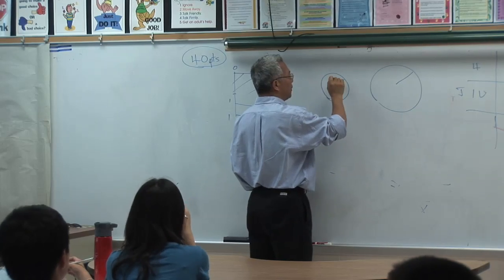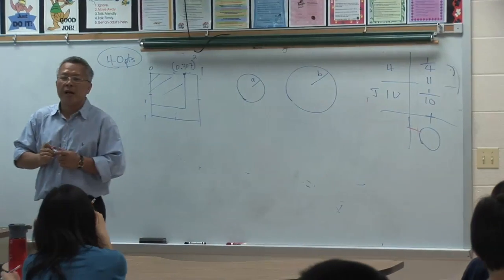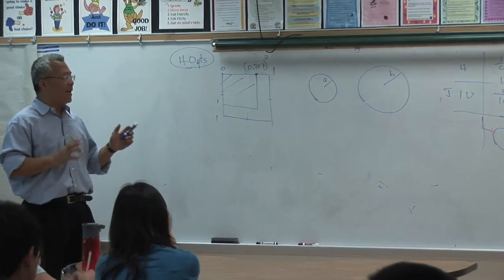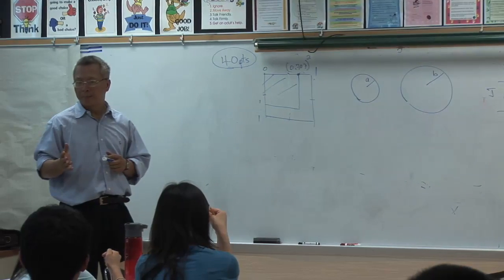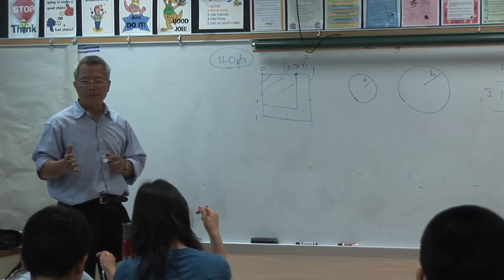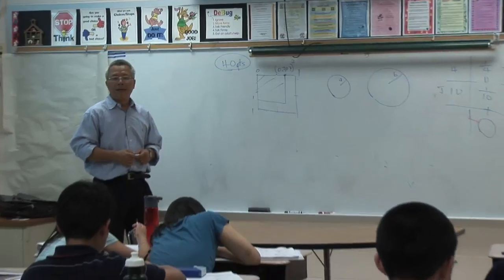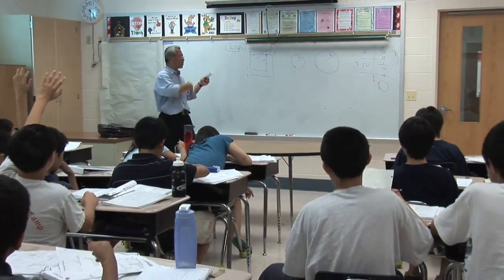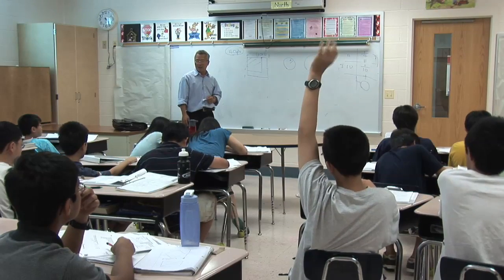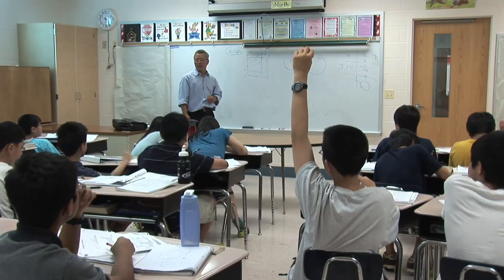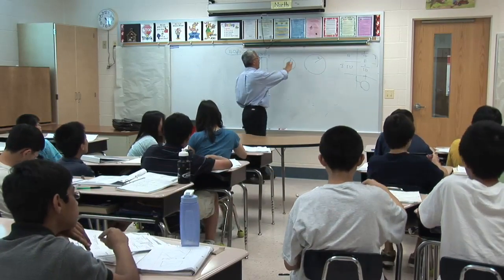This is a giveaway problem — just like a warm-up problem. You have to get this part right to earn my 50 points. The area ratio of two circles with radii A and B is A squared to B squared. That's easy.